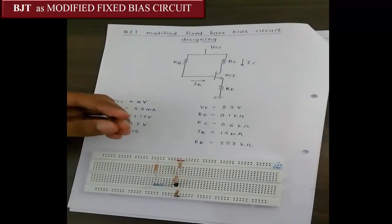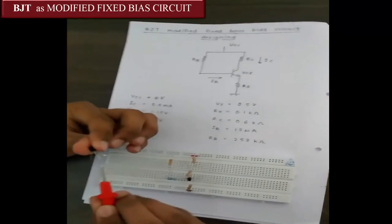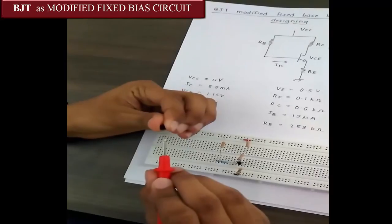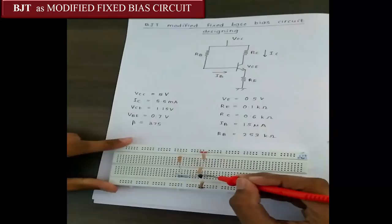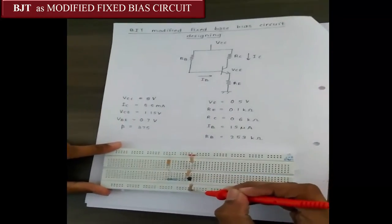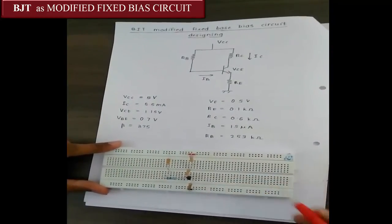Note that for BC547 BJT, the rightmost is emitter, the middle one is base and the leftmost is collector. Here, the emitter is connected to a 100 ohm resistance and that is connected to ground. This is the 100 ohm resistance.